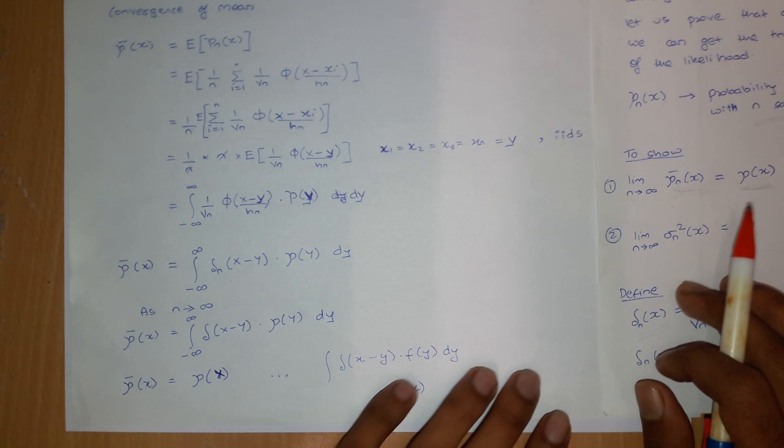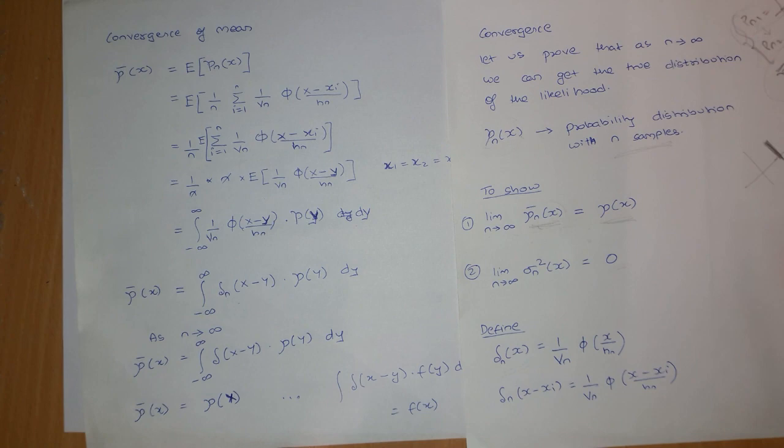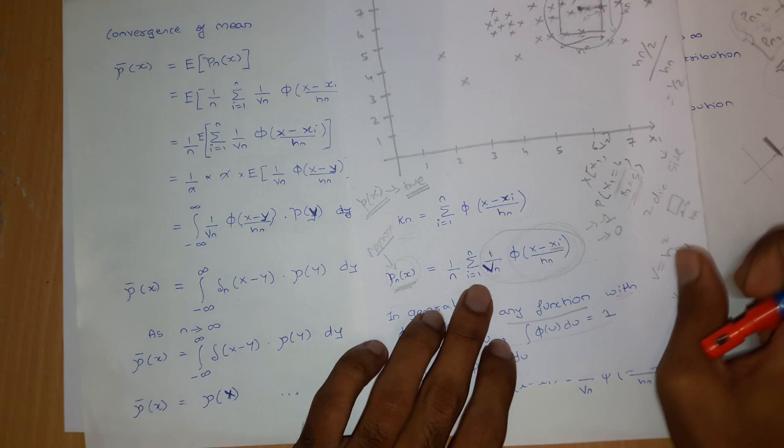We have the mean P̄_n of x. This is the convergence of mean proof. The mean of x is nothing but the expectation of p_n of x. We had the p_n of x formula — so I'm just placing it over here. Now I take n outside.